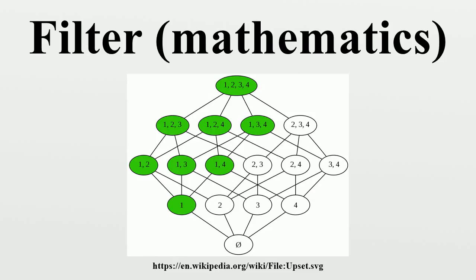General Definition: A subset F of a partially ordered set is a filter if the following conditions hold. F is non-empty. For every X, Y in F, there is some element Z in F such that Z ≤ X and Z ≤ Y. For every X in F and Y in P, X ≤ Y implies that Y is in F. A filter is proper if it is not equal to the whole set P. This condition is sometimes added to the definition of a filter. While the above definition is the most general way to define a filter for arbitrary posets, it was originally defined for lattices only.